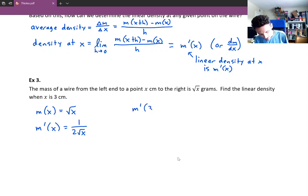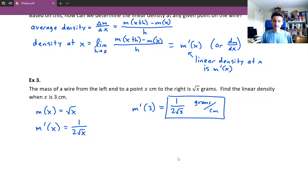Then plug in the x value that you're wondering, what is the linear density at that x value? And you get 1 over 2√3. And the only last thing here is that the units will be the units of mass, which are given as grams, over the units of length, which are centimeters. And that's it.